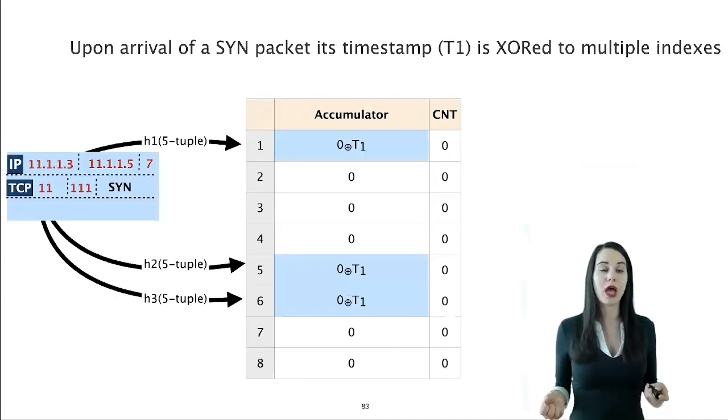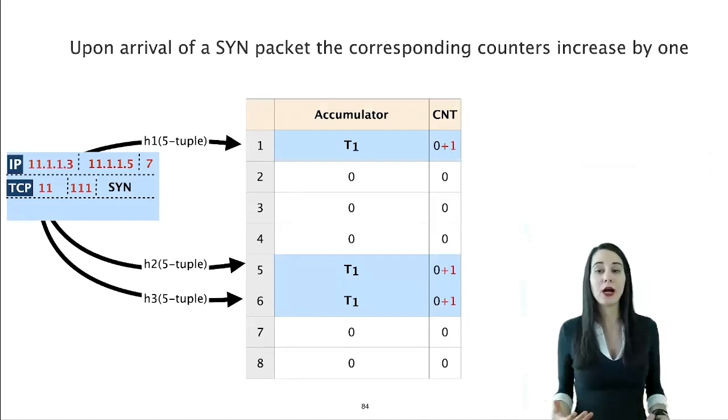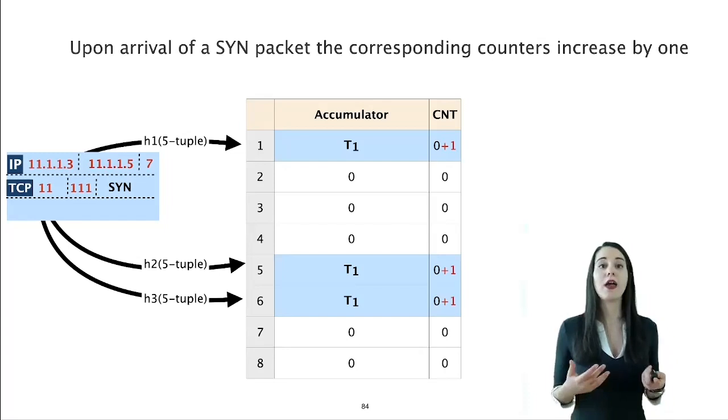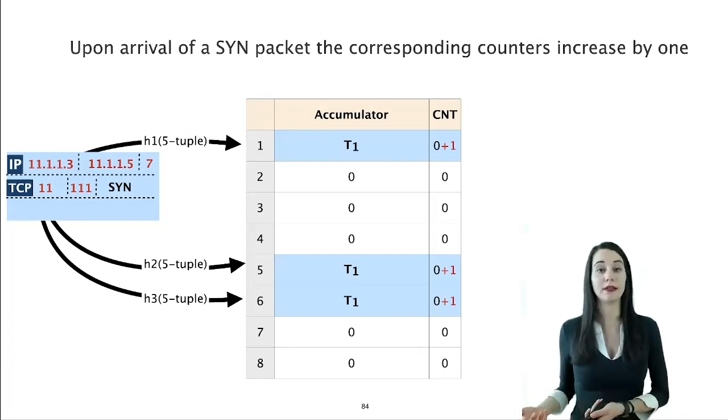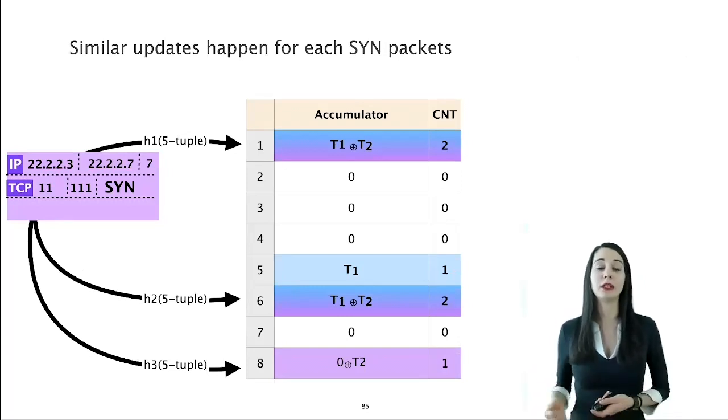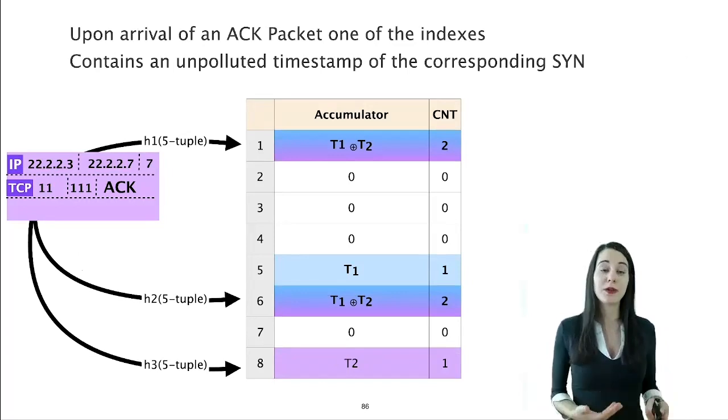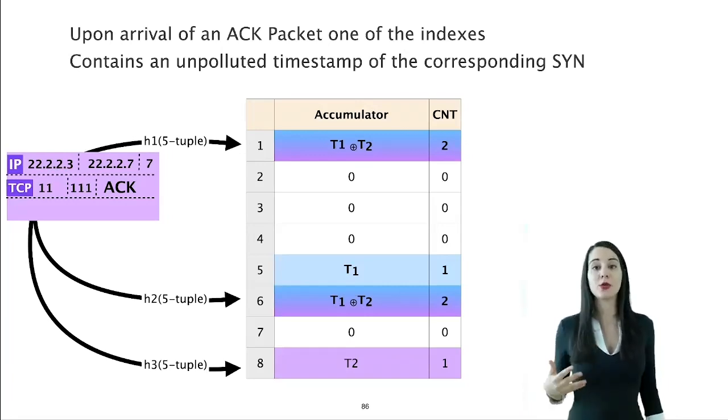So let's see how it works. Upon arrival of a SYN packet, its timestamp, say T1, is stored to multiple indexes, and the counters of the same indexes are increased by 1. The indexes are found by hashing the packet's 5-tuple. Again, I have colored the fields that are used in hashing in red in the slide. Similar updates happen for every SYN packet. For instance, the SYN packet of this purple flow triggers similar updates at time T2. Now let's assume that at time T3, the first ACK of the purple flow arrives. First, it checks whether the SYN of its flow has previously written in the structure. It does so by checking whether all values of the corresponding indexes are non-zero. Next, it tries to retrieve the timestamp of this SYN by searching for an index among the corresponding ones whose counter is 1. For instance, here, in index 8, the count is 1. Thus, the accumulator contains only the timestamp of T2.